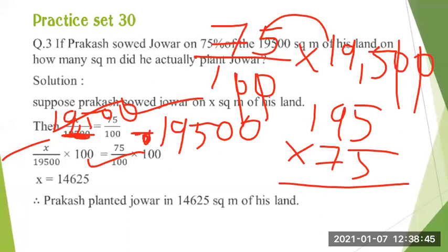So our final statement is: Prakash planted Javar on 14,625 square meters of his land.